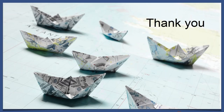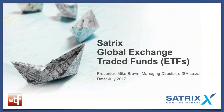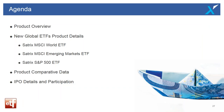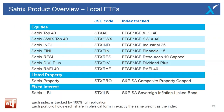I'm going to talk about a product overview — what these products are from Satrix. Then we'll go into more detail on the three new global ETFs: the World Fund, the Emerging Markets Fund, and the S&P 500 USA Fund. We'll look at comparative data between Satrix and other providers, and finish off with how you get involved in the IPO.